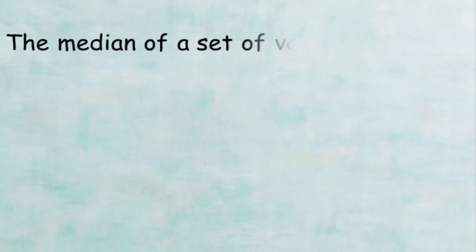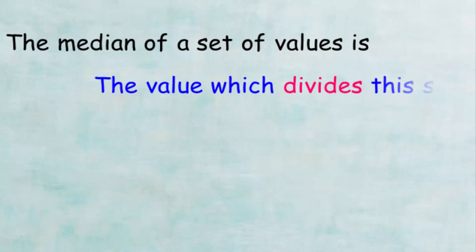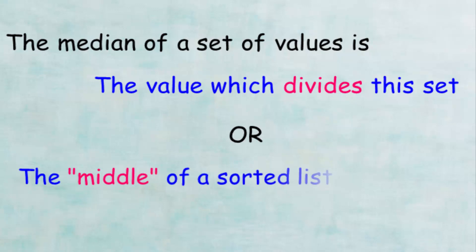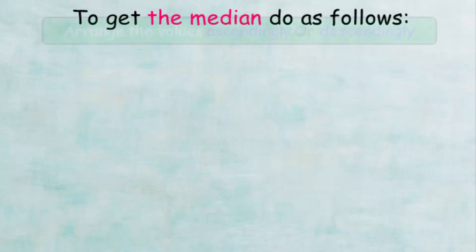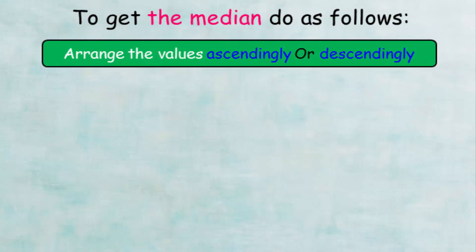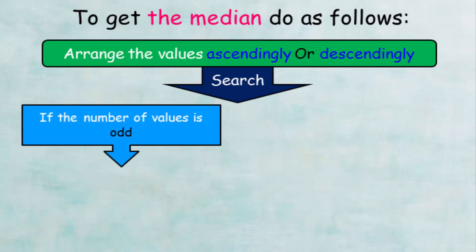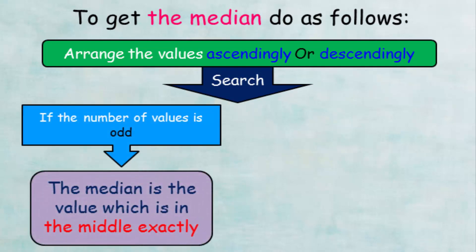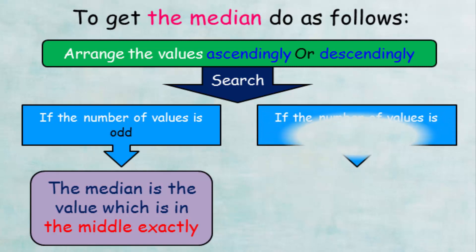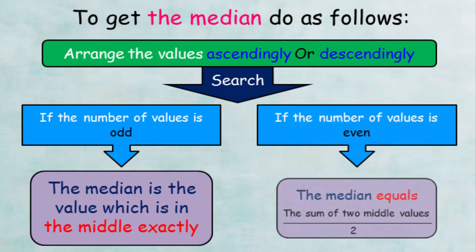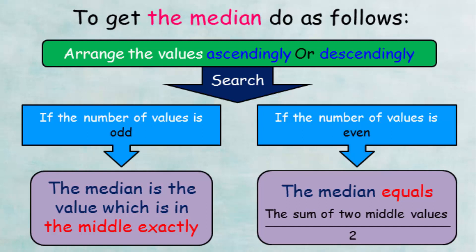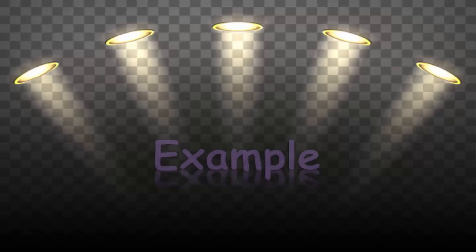The median of a set of values is the value which divides the set after arranging it in ascending order — or the middle of a sorted list of numbers. To find the median, the values must first be arranged in ascending or descending order. If the number of values is odd, then the median is the value which is exactly in the middle. If the number of values is even, then the median equals the sum of the two middle values divided by two.